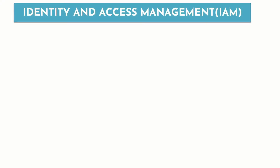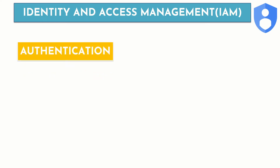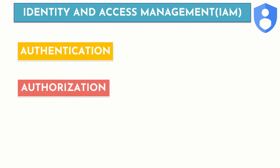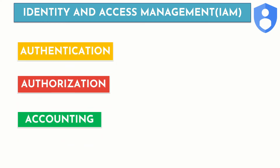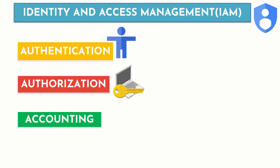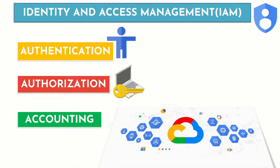Identity and access management has three important aspects: authentication, authorization, and accounting. Authentication takes care of who has access to your GCP resources. Authorization takes care of what level of access the authenticated user has, and accounting covers which resource the user has access to.